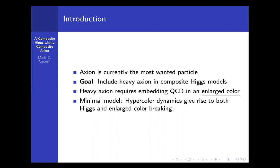Typically, heavy axion requires embedding the QCD in an enlarged color. We're going to consider a minimal model in which we have the hypercolor dynamics give rise to both the Higgs and also breaking the enlarged color.